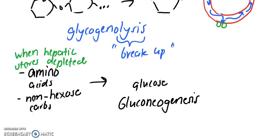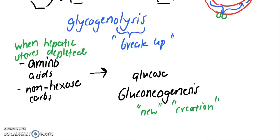Which means making new glucose. Neo just means new, genesis means creation, and glucose means glucose. So we're creating new glucose.